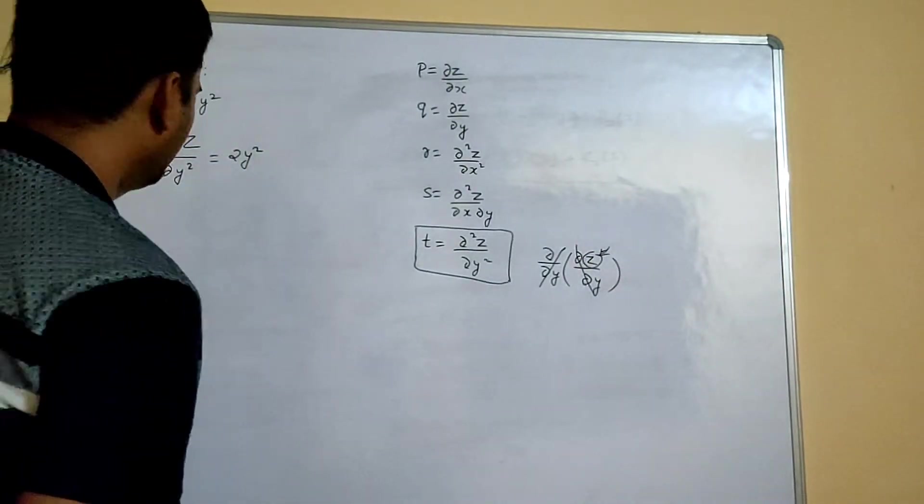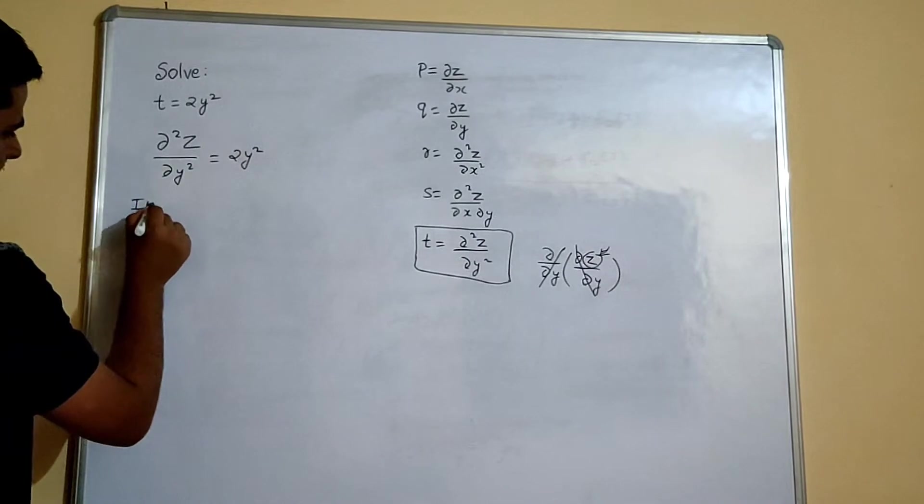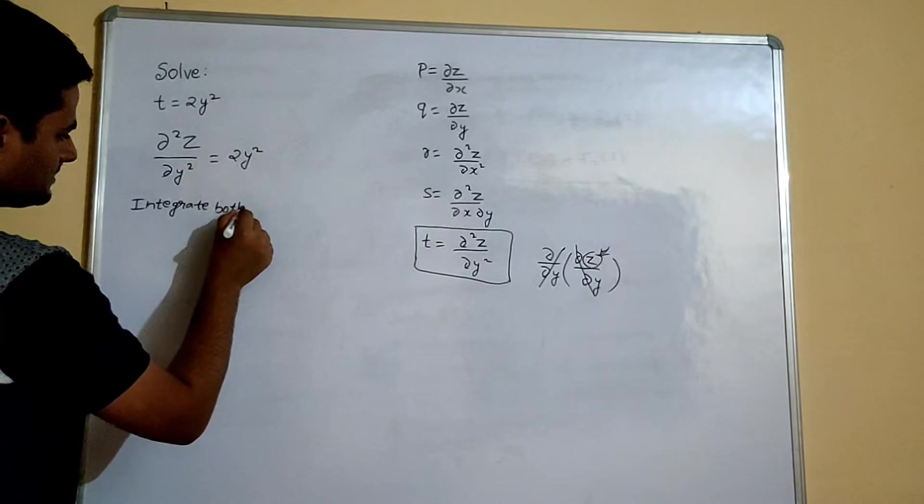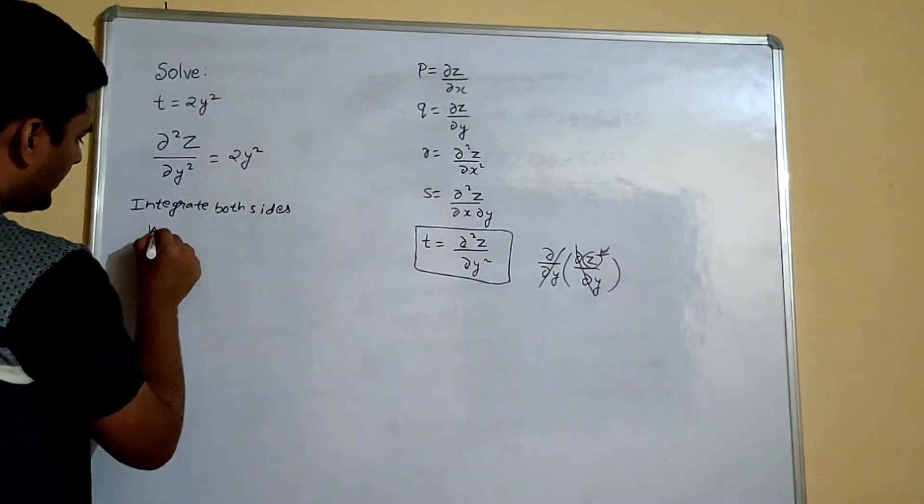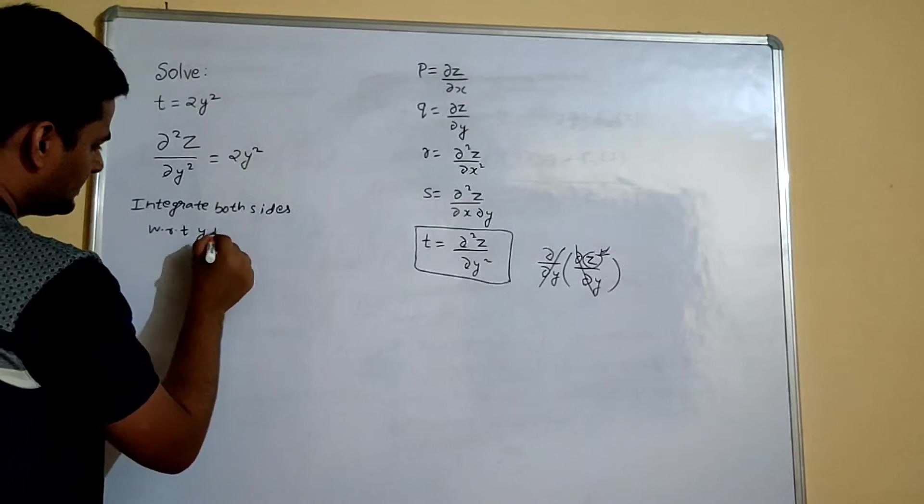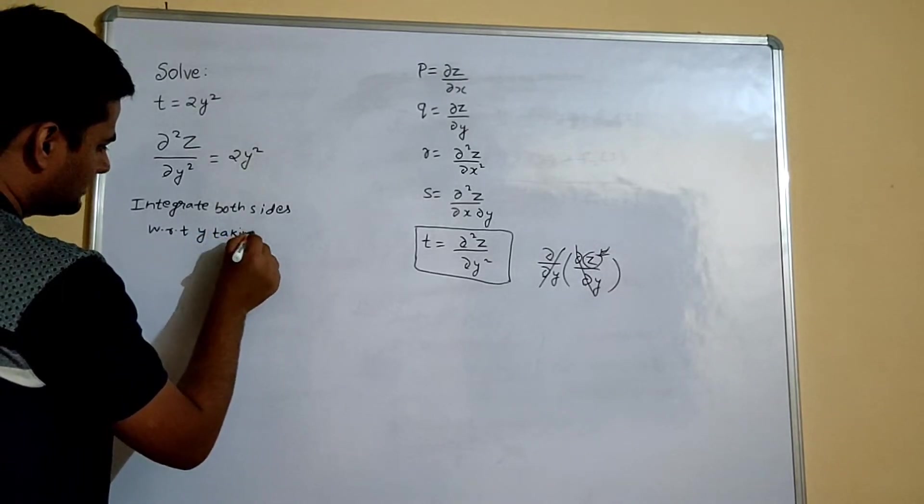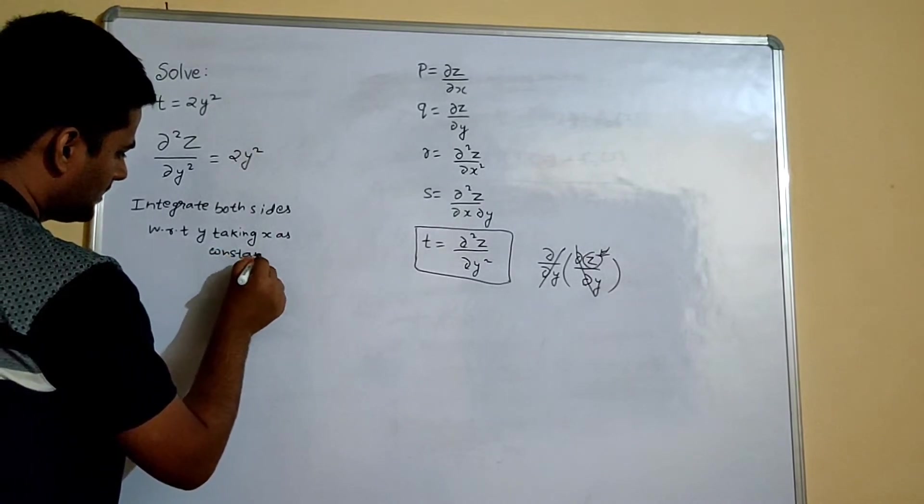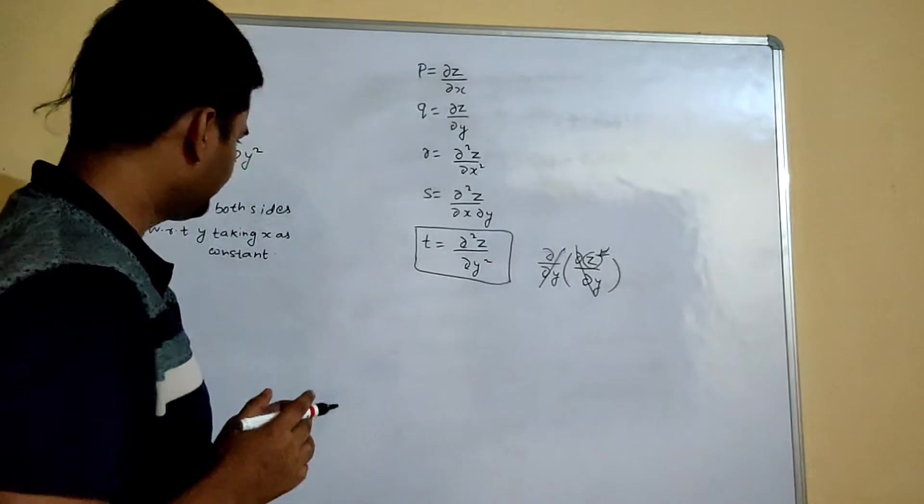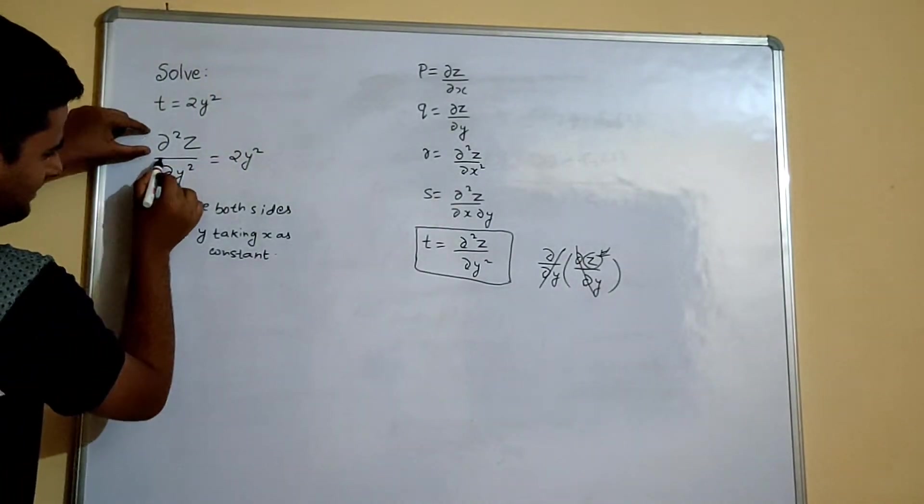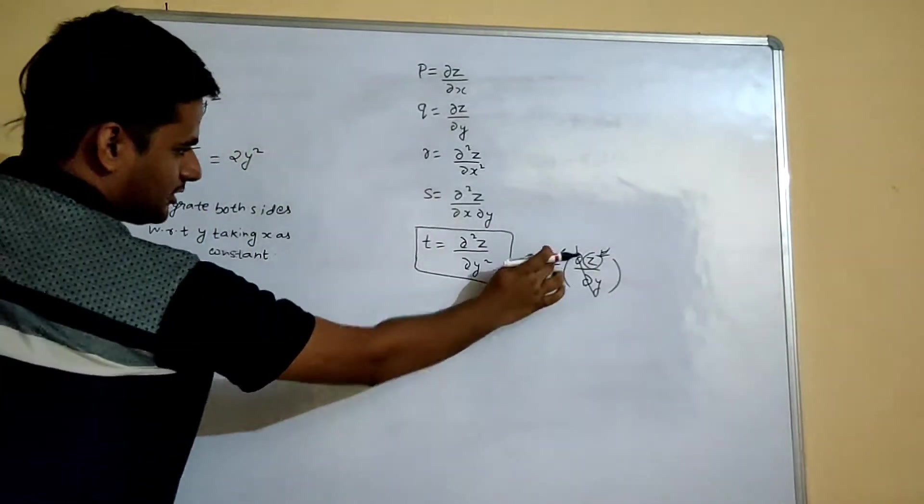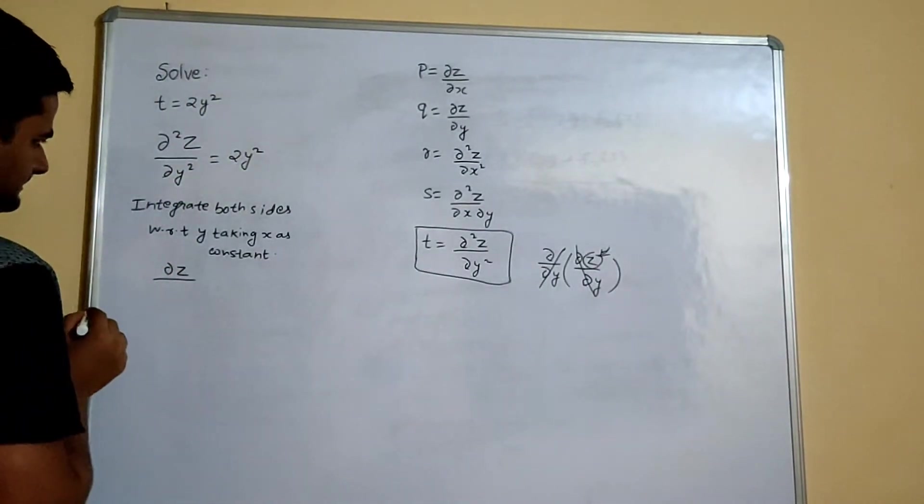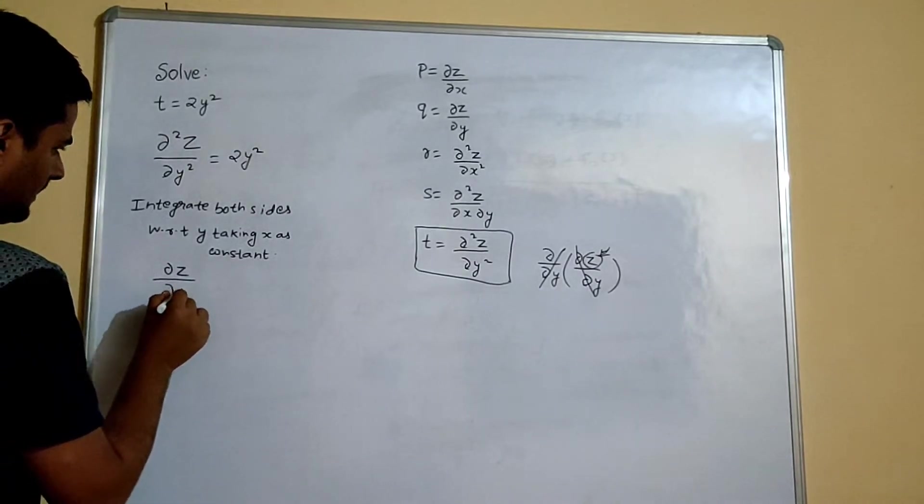So if you integrate both sides with respect to y, taking x as constant. So if you do this operation, what you will get? One del by del y will get removed as I told you. So you will get del z by del y equals...